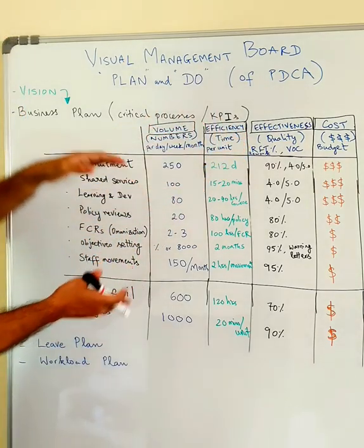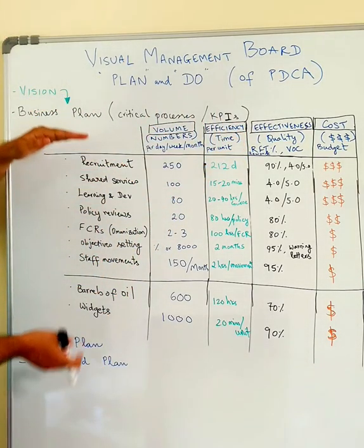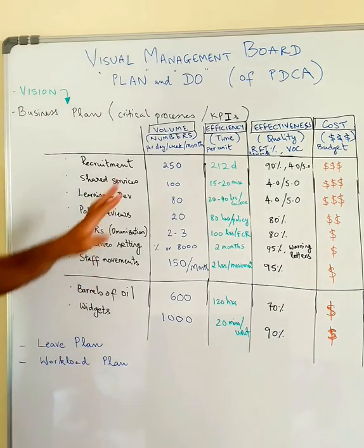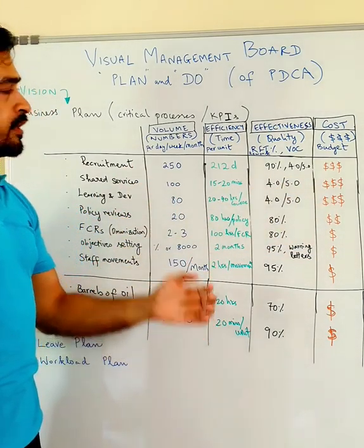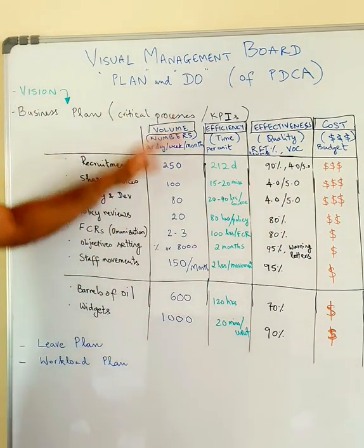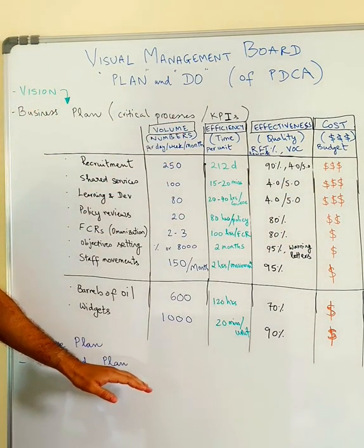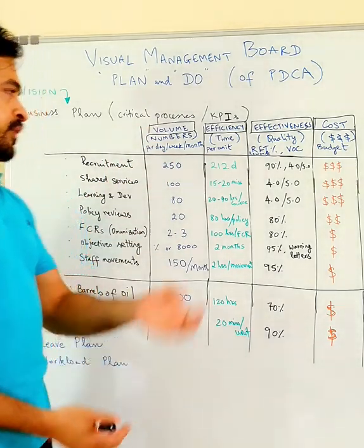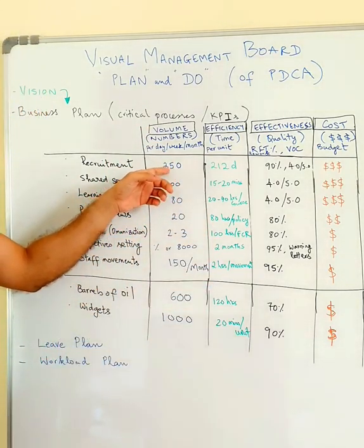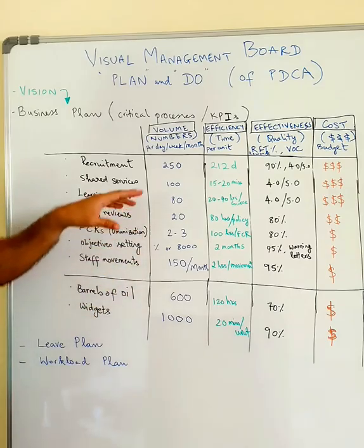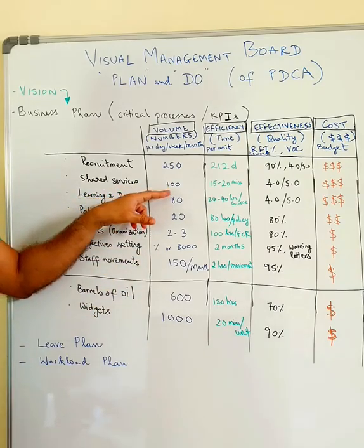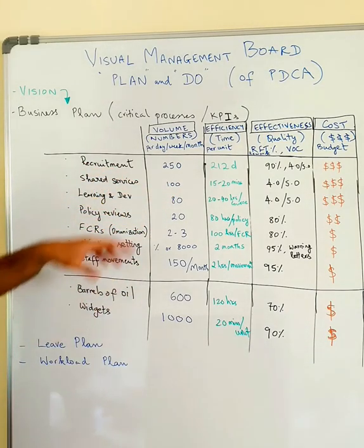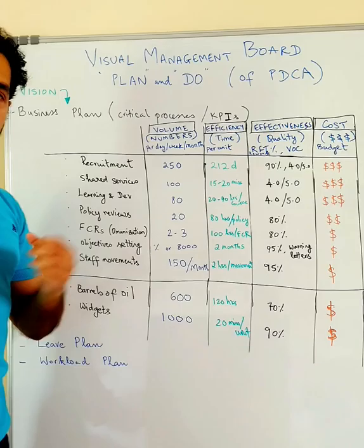If you take a look at any process or any business plan, it has four components. The first is volume — volume in terms of numbers. For example, how many candidates need to be recruited, how many calls need to be answered in the case of shared services, how many courses need to be delivered in the case of learning and development.